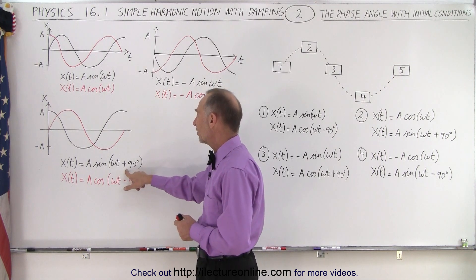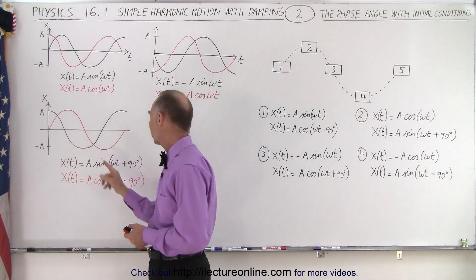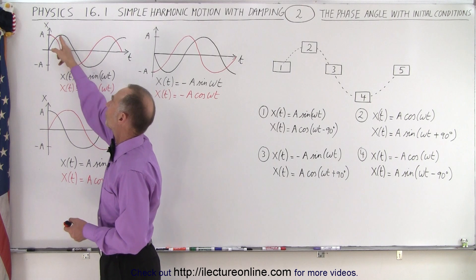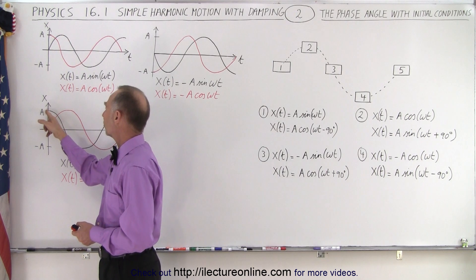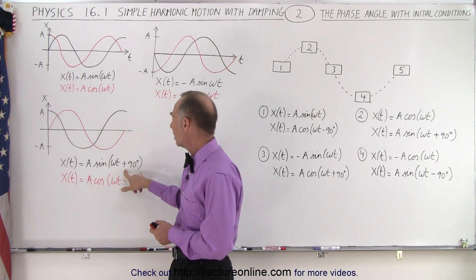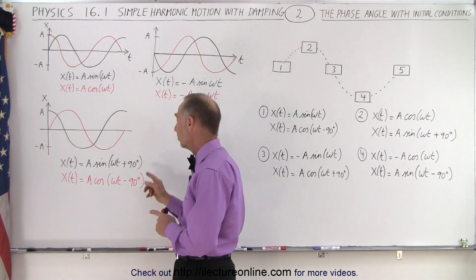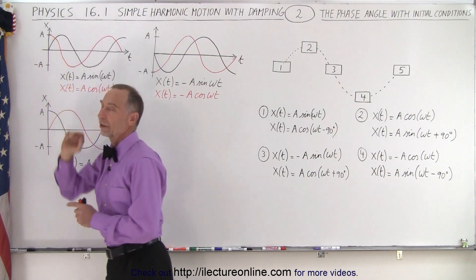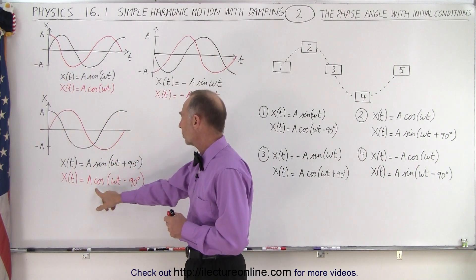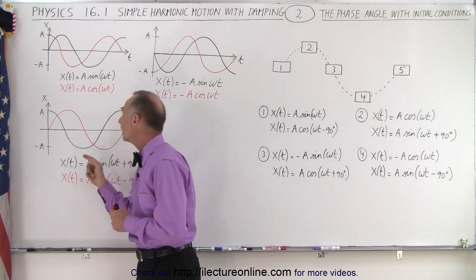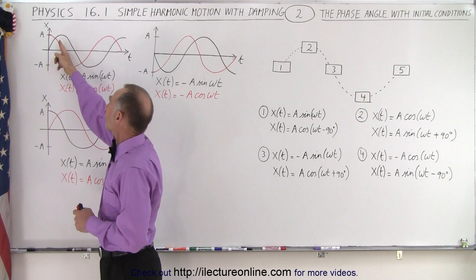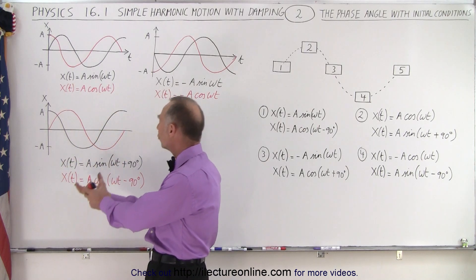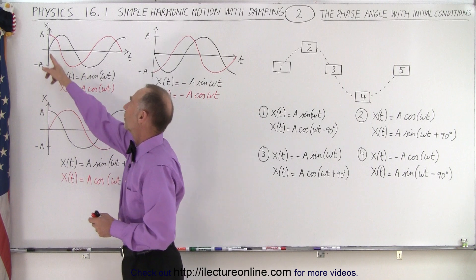If we add or subtract a phase angle, for the sine function if we add 90 degrees we now start 90 degrees later, so we start at x equals plus a when we have a 90 degree phase shift. Another way of looking at it is that plus 90 degrees takes the curve and moves it to the left 90 degrees. Similarly, the cosine of omega t minus 90 degrees means we take the cosine function and move it to the right 90 degrees, so we start here instead of at the top.